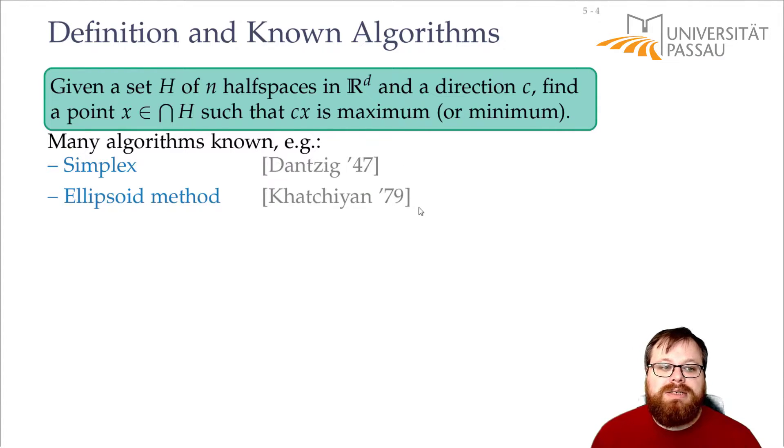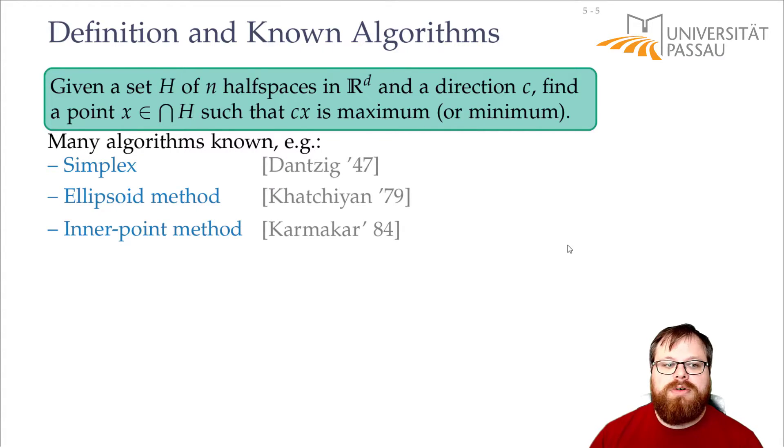However for some time it hasn't even been known if linear programs can be solved in polynomial time and the first algorithm that did it in the worst case in polynomial time was the ellipsoid method by Khachiyan in 79. But this has a very big polynomial so the running time is order of n to the 6 times the number of bits you use to encode the instance. This was improved by the inner point method by Karmarkar 85. There you only have n to the 3.5 times the number of bits. And he also claimed that it's faster in practice than the simplex algorithm which people are undecided. Some prefer simplex, some prefer inner point method, but these are basically the most used algorithms.